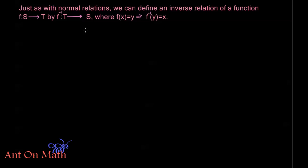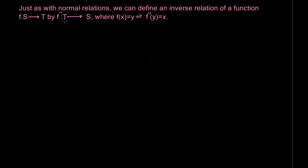However, the inverse of a function is not necessarily a function. For it to be a function, it still needs to meet the criteria that we have for a function. In other words, it needs to be well-defined, meaning that in this case, for f inverse to be a function, every element of t needs to appear in an ordered pair where that element of t appears exactly once.